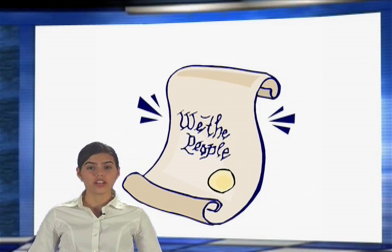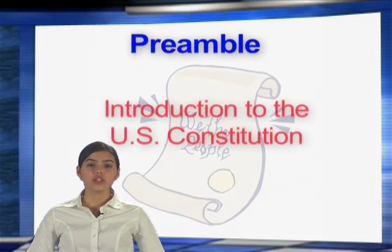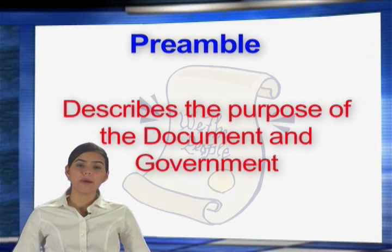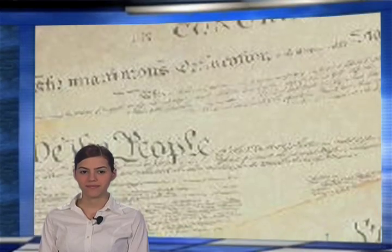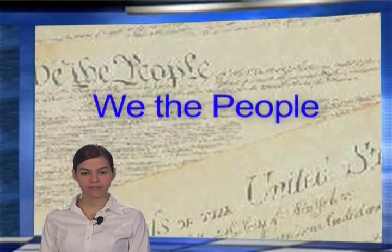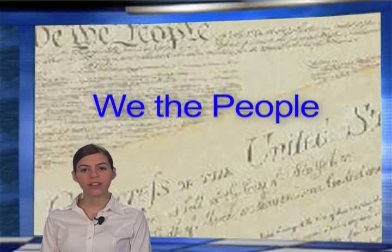The first part of the U.S. Constitution is called the preamble. The preamble is the introduction to the U.S. Constitution. The preamble describes the purpose of the document and government. In it, we find the idea of self-government in the first three words of the Constitution. These first three words are: We the People.